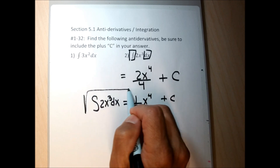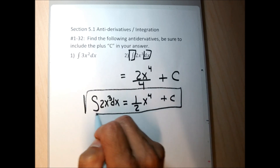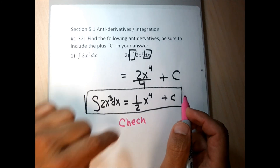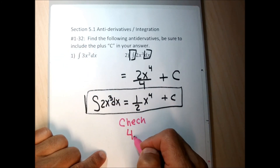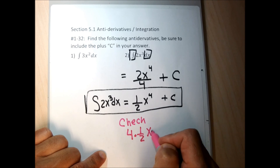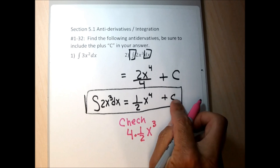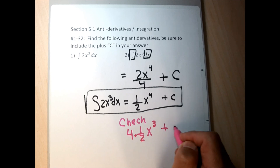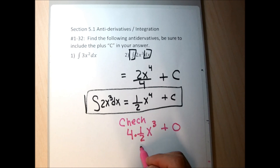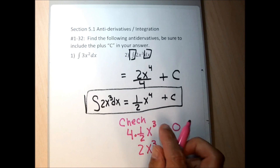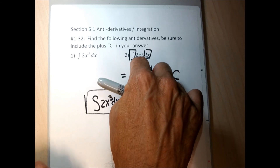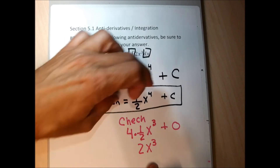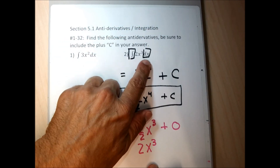I'm done, but I'll check this first problem. I take the derivative of each piece: 4 times one-half is 2, I lower the exponent by 1 to get x cubed, and the derivative of the constant C is 0. So the derivative is 2x cubed — exactly what was between the integral sign and the dx. My answer is correct.